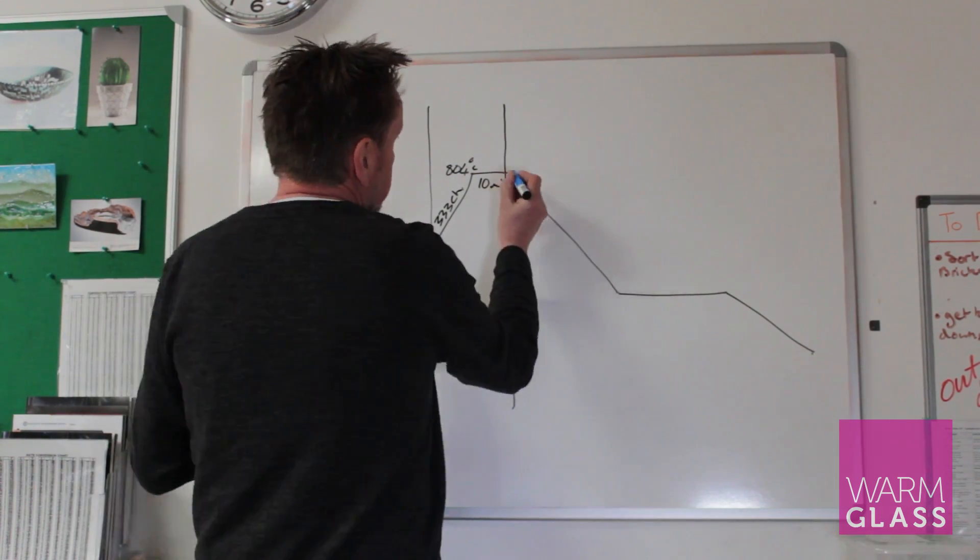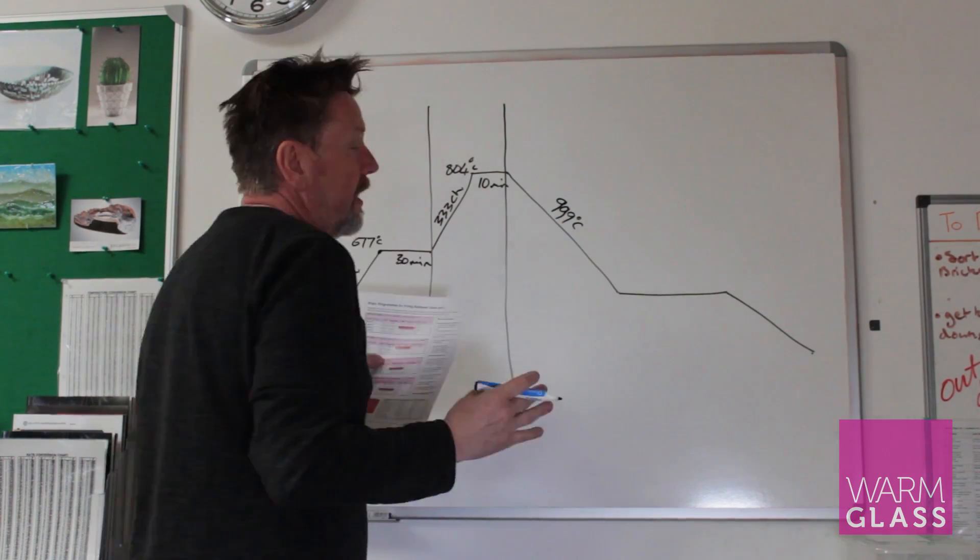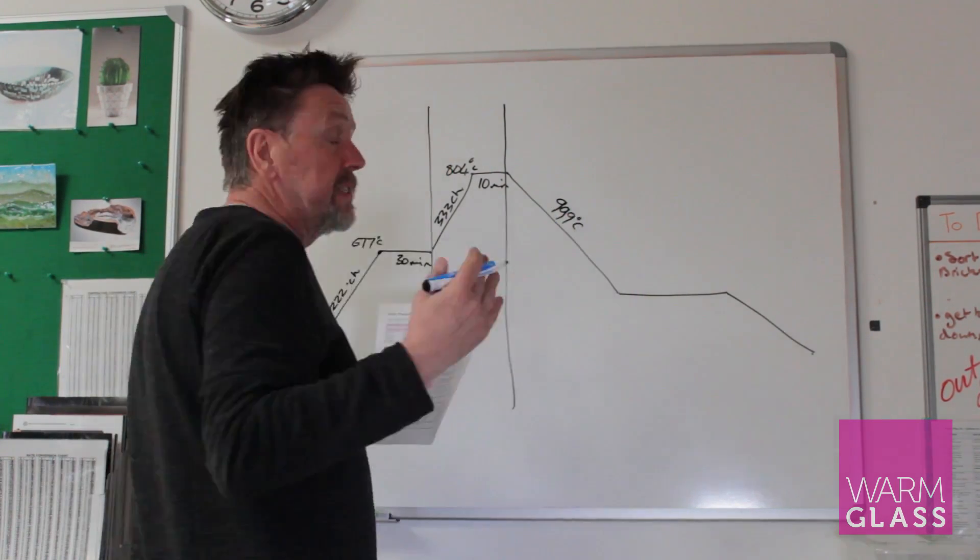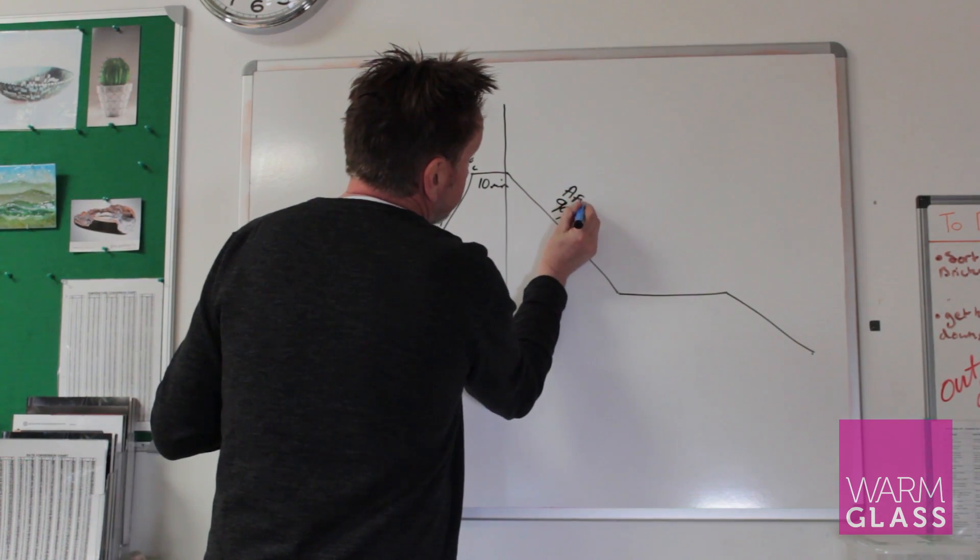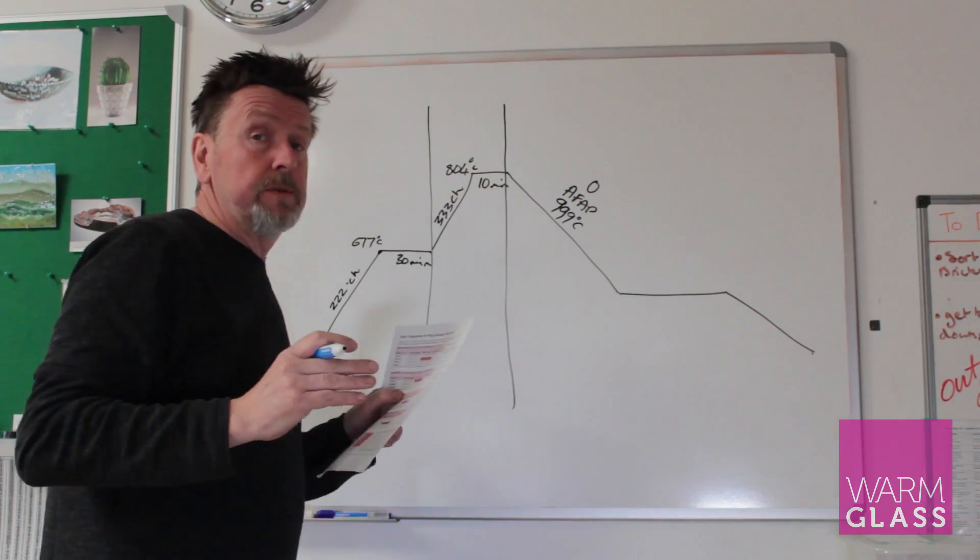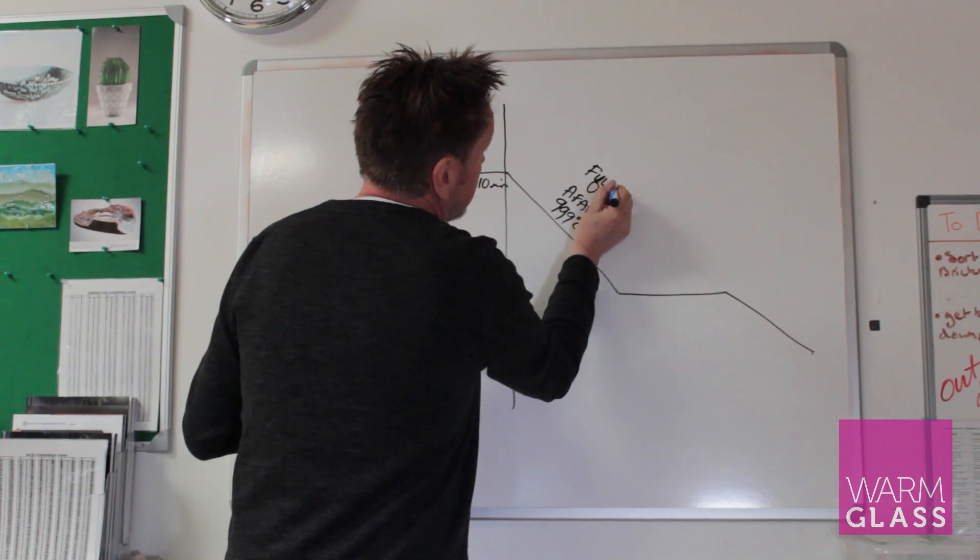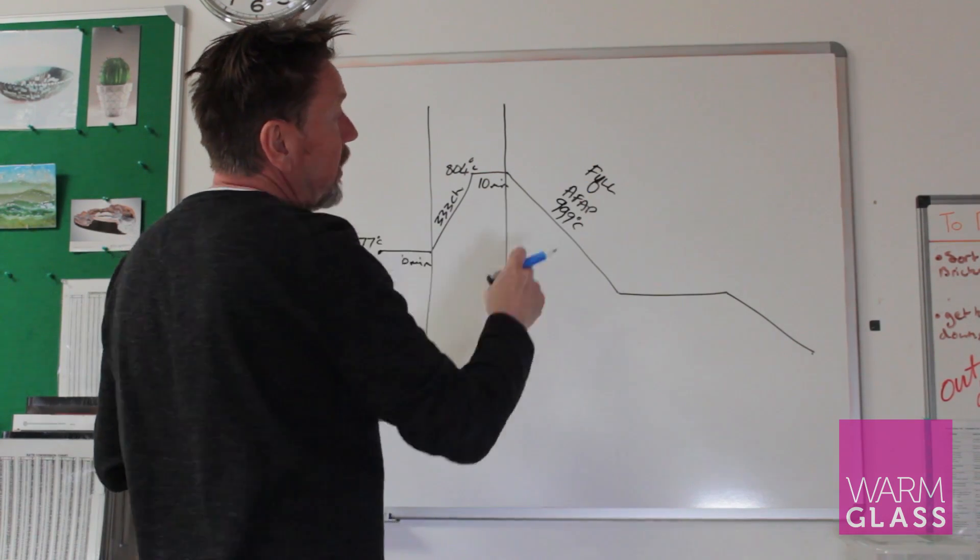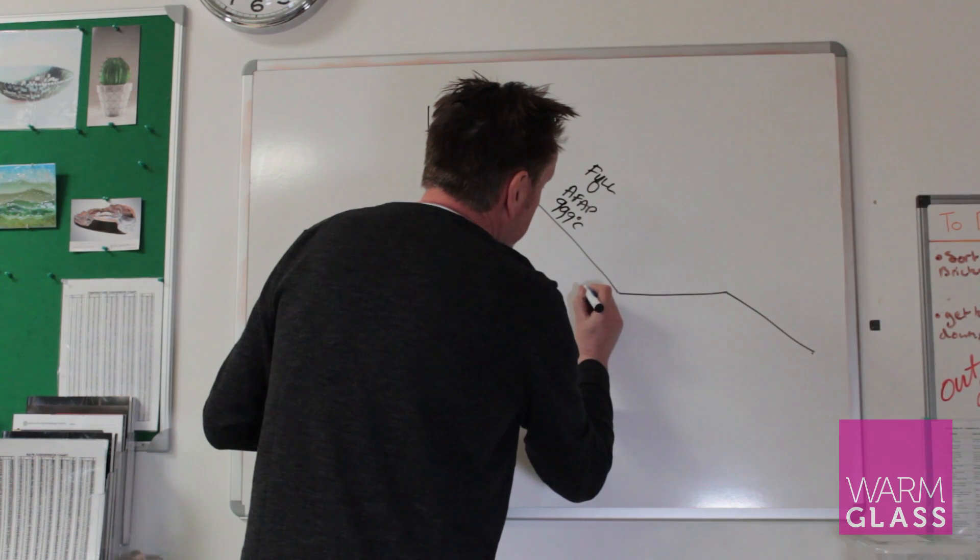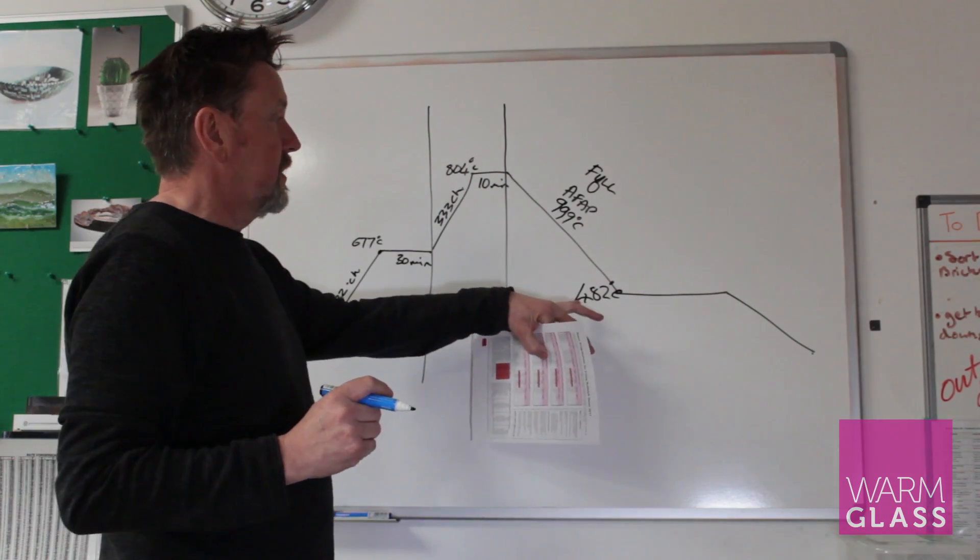So then you're coming down again from 804. And here we put in 999 degrees per hour. Now of course the kiln can't actually come down at 999 degrees per hour, but it will come down as fast as it can. So in some kiln schedules, you'll see that explained as AFAP, as fast as possible. Or on some programmers, it can be zero, which means that it comes down as fast as it can. Or it can also be full. Most programmers, you program in 999 and then it will just say full on the programmer. So 999 degrees per hour takes you down to 482 degrees centigrade. Now that's the annealing point. The annealing temperature for bullseye glass is 482.